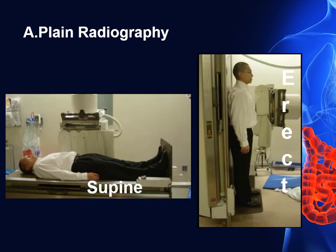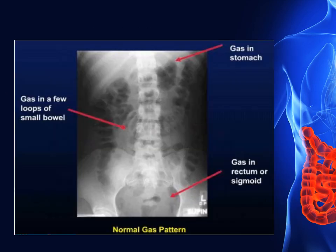On plain radiography, as you can see, we have two positions: supine and erect. Here is the gas distribution within the abdomen. We have gas in the stomach in the left hypochondrium and the inverted U-shape with characteristic haustration at the periphery of the abdomen representing the gas of the colon, and a few loculi of air in the center of the abdomen resembling gas in the small bowel loops.